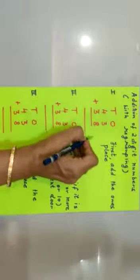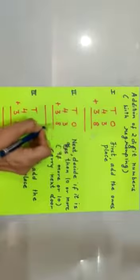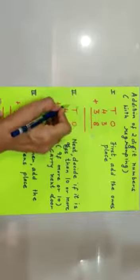Now in the second step, decide if it is less than 10 or more. If it is more or equal to 10, then carry that extra next door. So this one is extra here. So this one we write here and one extra we are carrying over here. So I hope the second step is also clear to you.